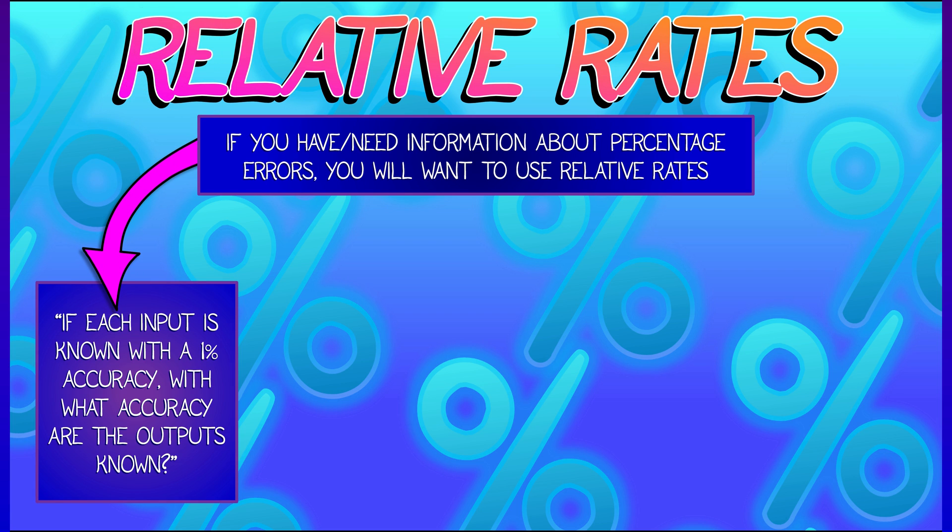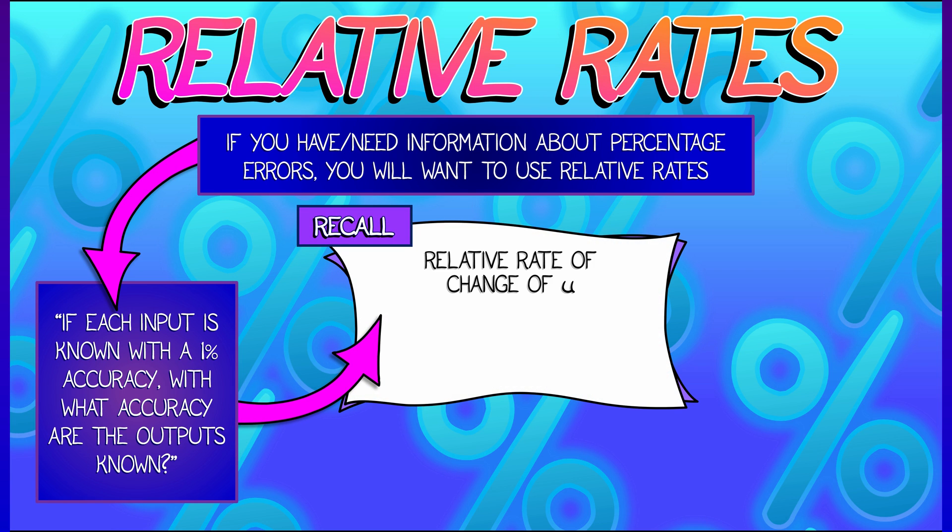I only know these inputs with 1% accuracy. With what percentage accuracy do I know the output? So let's say you've got some quantity, some u. The relative rate of change of u is the derivative of the log of u. That is, in differential form, it's du over u.